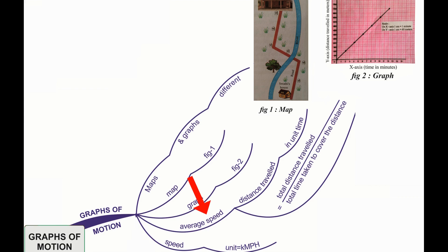Average speed. Average speed is the distance travelled in unit time and it is given by total distance travelled by total time taken to cover the distance. Units of speed is km per hour.